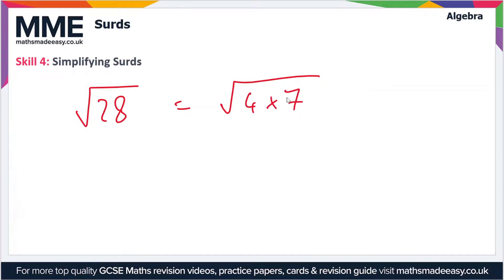In this case, 28 is equal to 4 times 7. Using our rules from the first video, this is equal to √4 times √7, and the square root of 4 is 2. So we've got 2 times √7, which simplifies to 2√7.